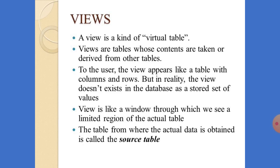A view won't occupy any space in memory — we can just see the rows and columns. A view is like a window through which we can see a limited region of the actual table. The table from which the actual data is obtained is called the source table.